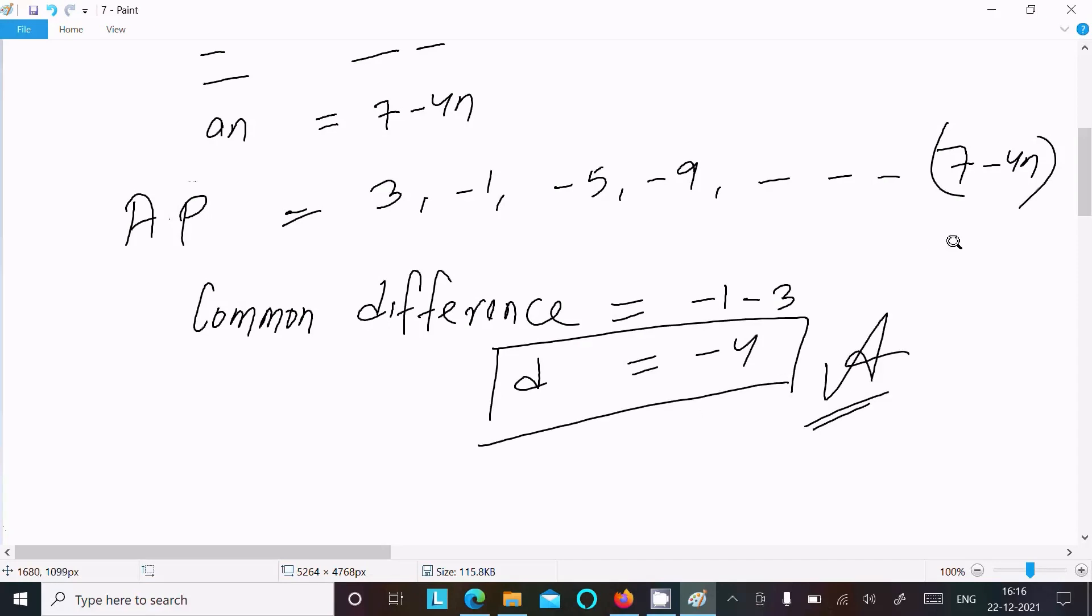Or you can take this one: minus 1 minus 5. So minus 1, thereafter here minus minus 1. So minus 1 minus minus is plus plus, so this comes minus 4. So difference of any two consecutive numbers, the common difference is minus 4.